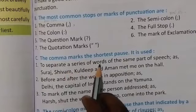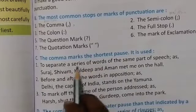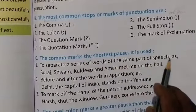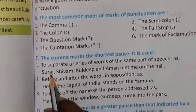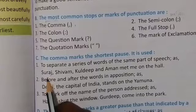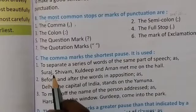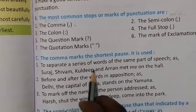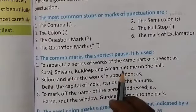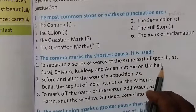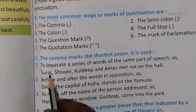The comma is used to separate a series of words of the same part of speech, as: Suraj, Shivam, Kuldeep, and Aman made me on the hall — then full stop. एक एक नाम बोलते हुए थोड़ा रुक रहे हैं — यही shortest pause है, थोड़ी देर के लिए जब हम रुकते हैं।